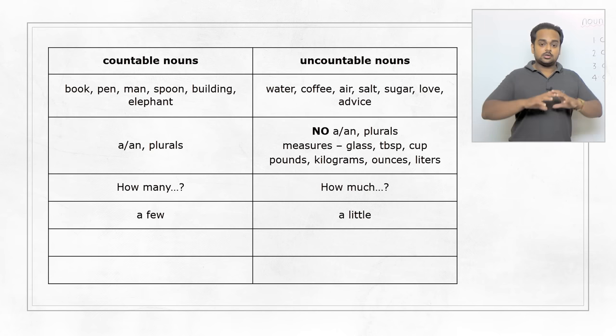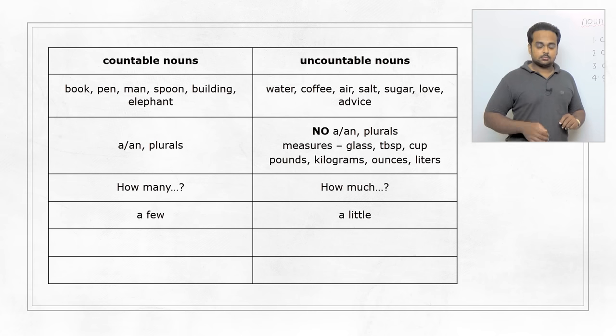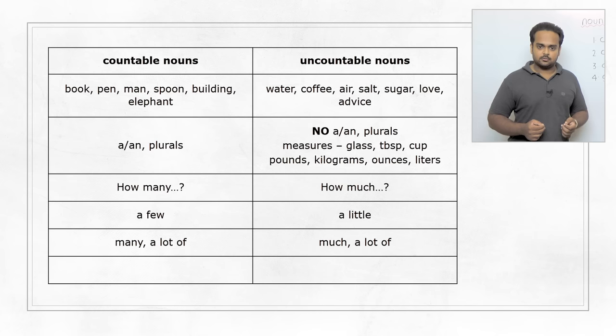And what about to talk about a big number or a big quantity? Can you tell me what we use? With countable nouns, we use many or a lot of. There are many computers in my office, or there are a lot of computers in my office. With uncountable nouns, we can use much, but that's less common. It's more common, once again, to use a lot of. Like, there is a lot of coffee in the cup. So notice that a lot can be used both with countable and uncountable nouns.